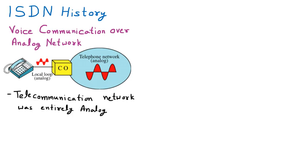Earlier, the telephone at our home was a landline phone connected to a telephone exchange that was completely analog. From the company office, a line was given to us for two-way communication — calling and receiving. The wire coming from the telephone company to our home is called the local loop, and it was completely analog.